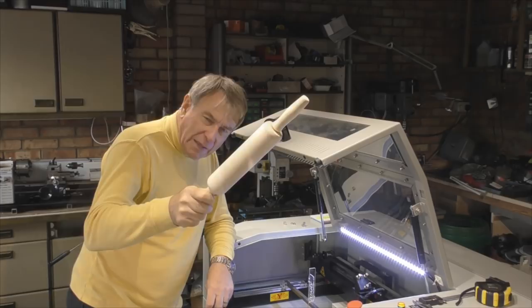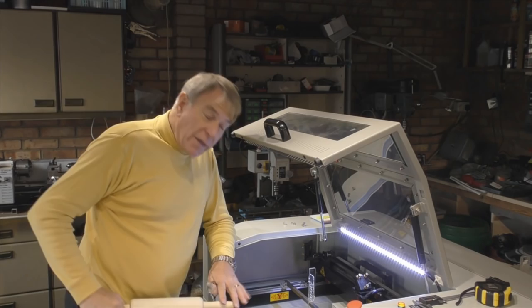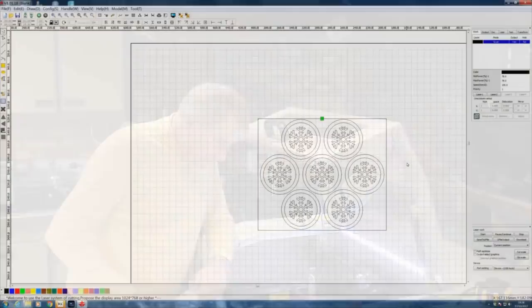I'm going to engrave on here a pattern for biscuit making. First of all, we're going to take a look at the file itself in RD Works, and then we'll come back to the machine and show you how we're going to set the machine up.